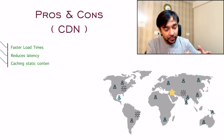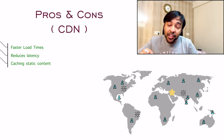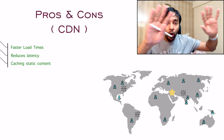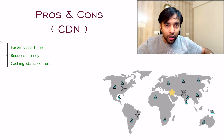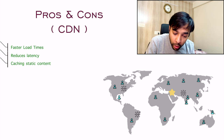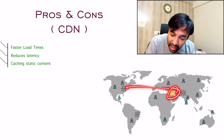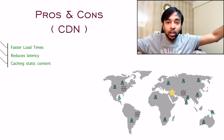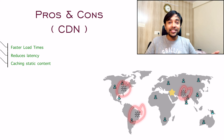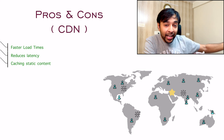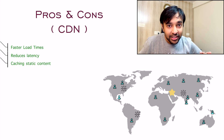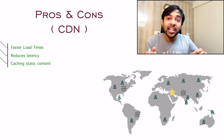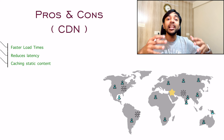Along with local content, you can cache all of the static content too. For example, when you open a website, you see all of the images, banners, and other things — do you want to go and fetch all of this information again and again from your central location? No. You can simply duplicate all of this information and have it available in all of these CDNs. Getting all of these images becomes very, very fast and your site loads up very quickly. This is how static caching helps you to reduce the latency even further.